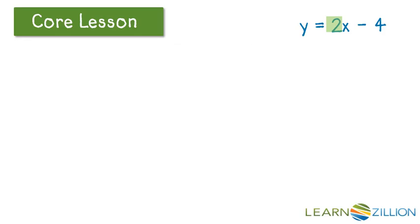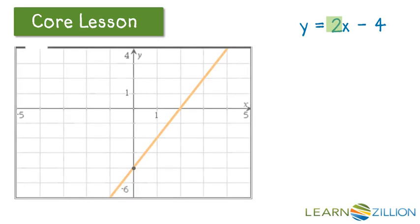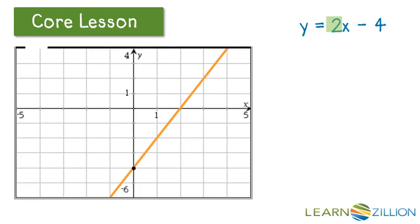When we get those two points counted out using the slope, we can go ahead and connect them, and that's the sketch of our graph. Starting with the y-intercept, plot that point, and then from the y-intercept go ahead and count out two more points using the slope — the slope being the change in y divided by change in x.